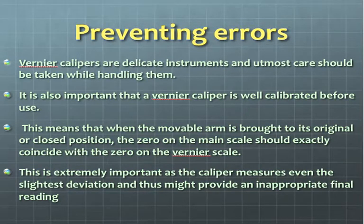This means that when the movable arm is brought to its original or closed position, the 0 on the main scale should exactly coincide with the 0 on the vernier scale. This is extremely important as the caliper measures even the slightest deviation and thus might provide an inappropriate final reading.